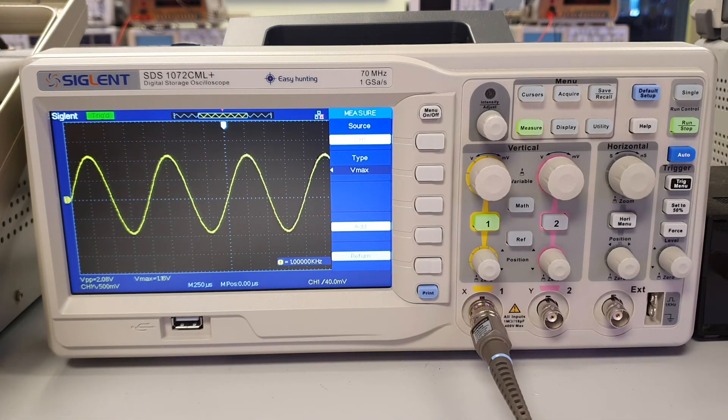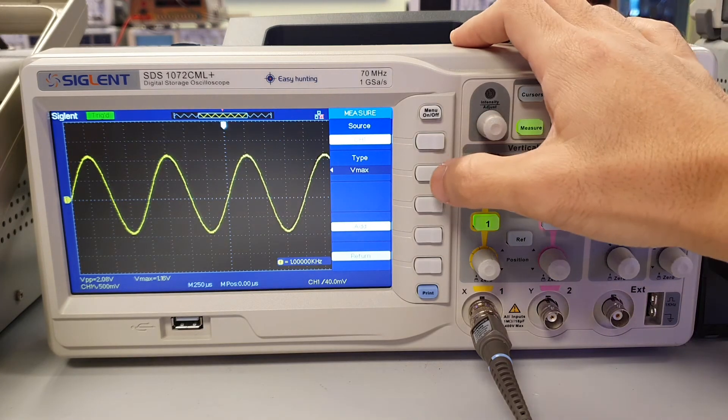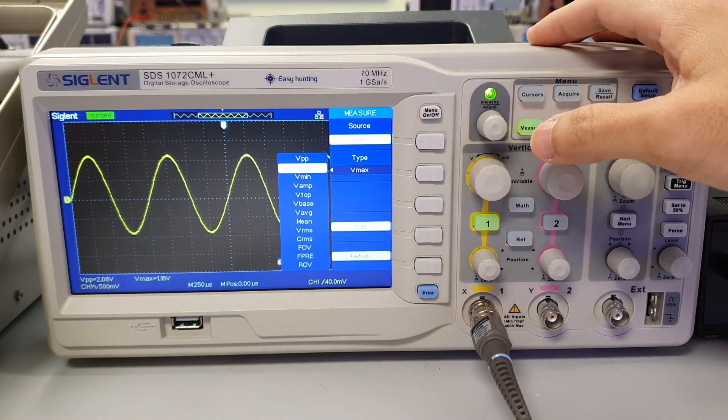And finally, to display the RMS voltage of the waveform, press the button beside type again and select VRMS.